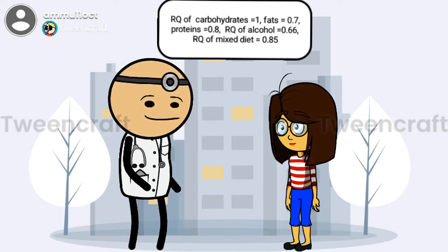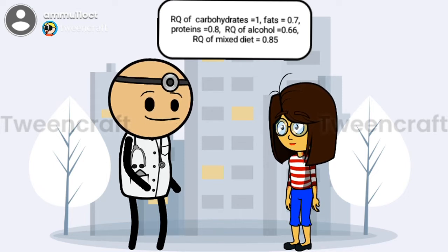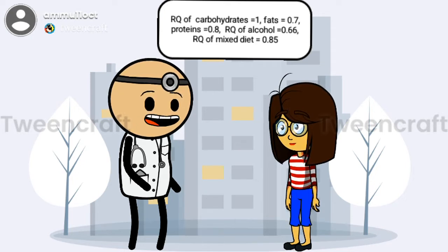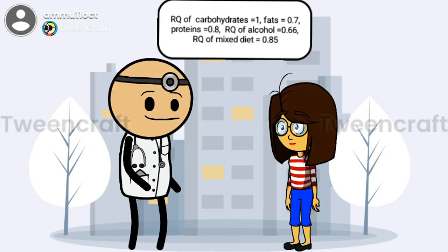Exactly Nikki, very good. You can remember fats RQ like this: the letter F can be written to look like 7, so fats is 0.7. Similarly, the P of proteins can easily be made to look like 8, so RQ of proteins is 0.8. For carbohydrates, just remember the RQ is equal to 1.